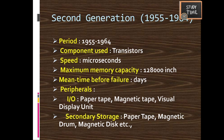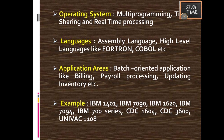Period: 1955 to 1964. Component: transistors. Speed: microseconds. Maximum memory capacity: 128,000 inches. Mean time before failure: days. Peripherals: paper tape, magnetic tape, visual display unit. Secondary storage: paper tape, magnetic drum, magnetic disc. Operating system: multiprogramming, time-sharing, and real-time processing. Languages: assembly language and high-level languages like Fortran and COBOL. Applications: billing, payroll processing, and inventory updating. Examples: IBM series and CDC series.